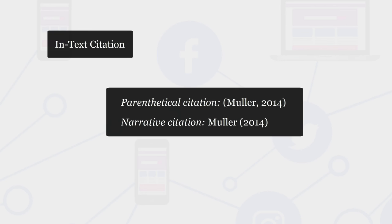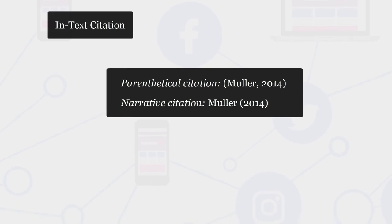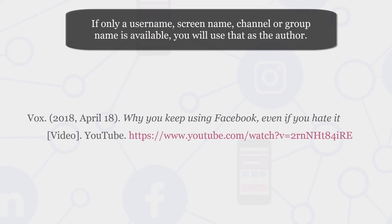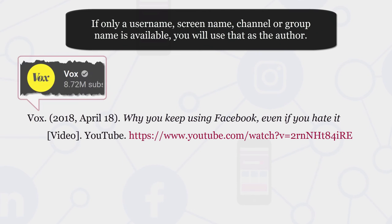In-text citation. Here is how it would look as an in-text citation. Use the author's real name and the year. If only a username, screen name, channel or group name is available, you will use that as the author. There is no need to put it in square brackets, as in the example below.